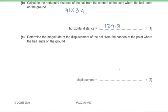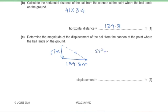Part C: Determine the magnitude of the displacement of the ball from the cannon. The ball travels 57 meters vertically and 139.8 meters horizontally. The resultant displacement is √(57² + 139.8²) = 150.9 meters.